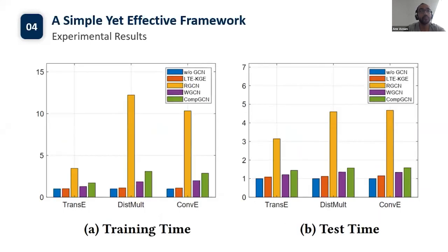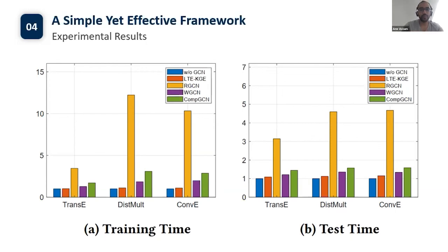We also evaluate the efficiency of different models, training and testing on the same machine with the same batch size, number of training epochs, and number of test samples. The number of GCN layers is 1. The results demonstrate that adding GCN encoders, especially RGCN, suffers from high training and test time usage. On the contrary, LTE-KGE models are as efficient as models without GCNs. Therefore, LTE-KGE models have the benefit of GCN models while avoiding their heavy computational load.